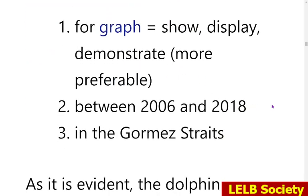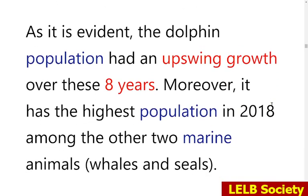The second paragraph states: 'the dolphin population had an upswing growth.' The word 'upswing' means an upward trend — it is a noun, so using it as an adjective here is grammatically wrong. The report also says 'over these eight years from 2006 to 2018,' but that is actually 12 years, so there is a miscalculation of the time period.